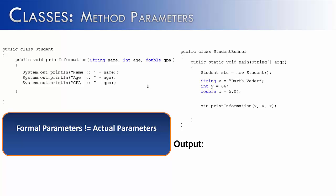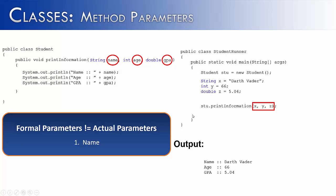Now we've seen ways that formal and actual parameters need to be the same, but I'd like to show a way they do not have to be the same — and that is in name. I created a String variable called x, an int variable called y, and a double variable called z in the StudentRunner, and passed these three values over to printInformation. This will work just fine and print out Darth Vader, 66, and 5.04. From one brace to the other, the variables are known as x, y, and z — but when they arrive in the method, they're known as name, age, and GPA. In most cases they will not have the same name.